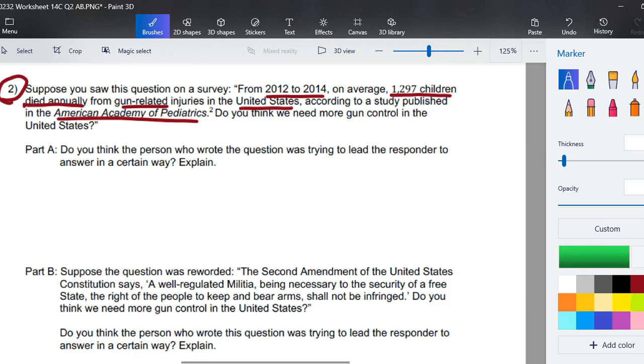Part A. Do you think the person who wrote the question was trying to lead the responder to answer a certain way? And the answer is definitely. They were trying to make an appeal to the emotions so that someone polled would be more likely to answer that gun control is needed.